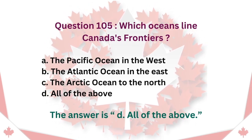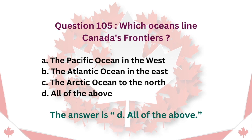Question 105: Which oceans line Canada's frontiers? A. The Pacific Ocean in the West. B. The Atlantic Ocean in the East. C. The Arctic Ocean to the North. D. All of the above. The answer is D. All of the above.